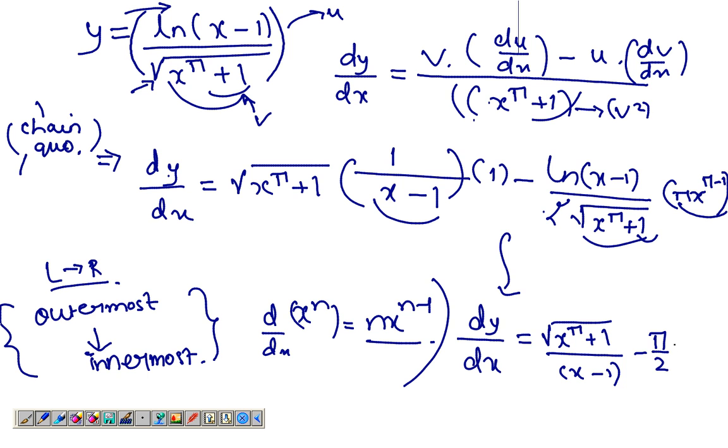Pi by 2, x to the pi minus 1 and then x minus 1, minus natural log of x minus 1 over root x to the pi plus 1. So that's the answer.